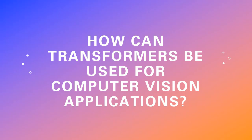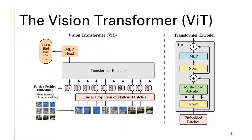How can transformers be used for computer vision applications? This is the Vision Transformer. It uses a classic transformer encoder, along with some external modifications, to allow the Vision Transformer to learn information from images. The Vision Transformer came from a paper published in 2021 called 'An Image is Worth 16x16 Words' by Dosovitskiy et al. Since the publishing of this paper, Vision Transformers have beat out convolutional neural networks, or CNNs, for image recognition, since they are able to view the image more globally when compared to CNNs.